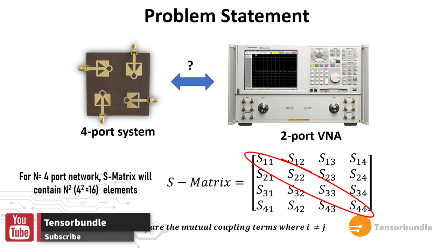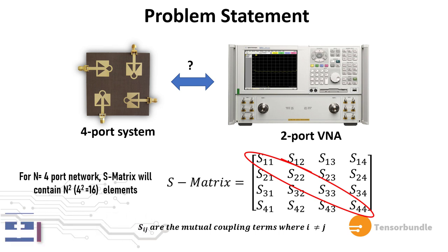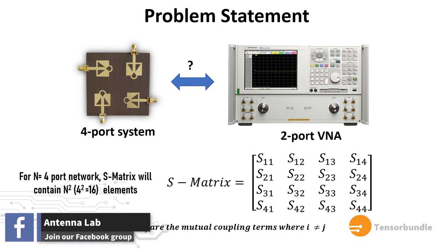So S11, S22, S33, and S44. All these four elements will indicate the reflection coefficients, and all other terms will indicate the mutual coupling terms. So this is what we're going to measure by this VNA.